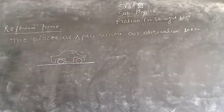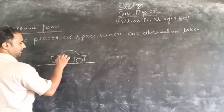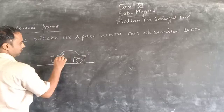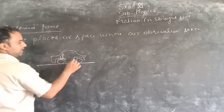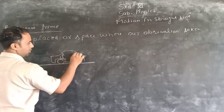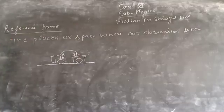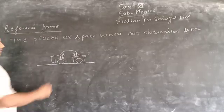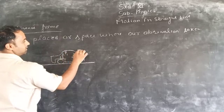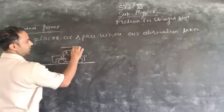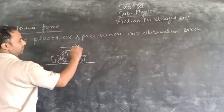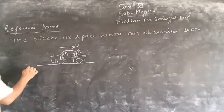There are two chairs for sitting. The first chair is black and the second chair is black. Two persons are on the seat. This is passenger one, P1, and this is passenger P2. This is the car and the velocity of this car is given.